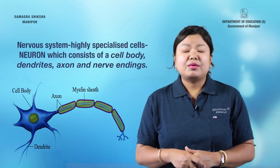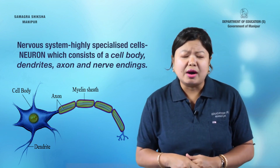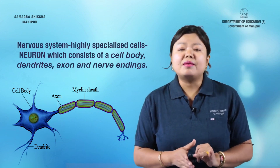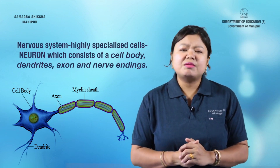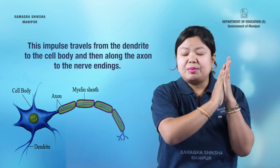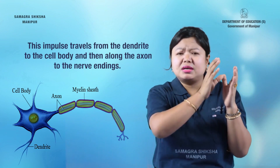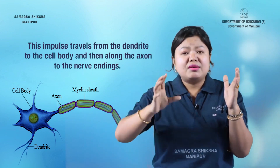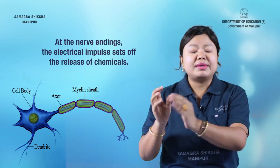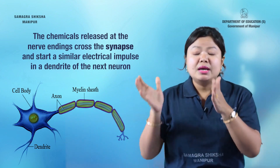The nervous system works through neurons. The nerve cell consists of a cell body, dendrites, axon, and nerve endings. The dendritic tip converts a chemical signal into an electrical impulse. That electrical impulse travels along the nerve, and at the nerve endings, chemicals are released.